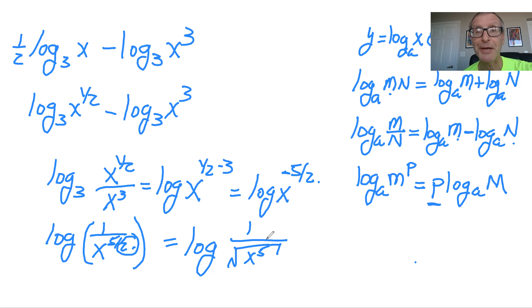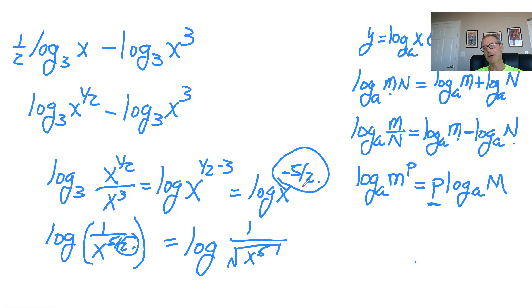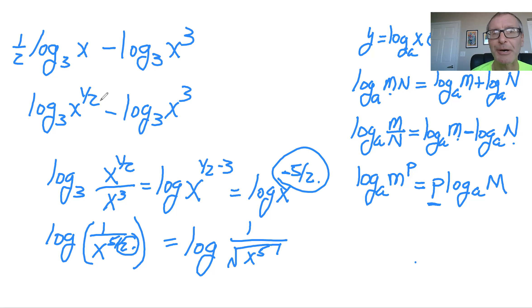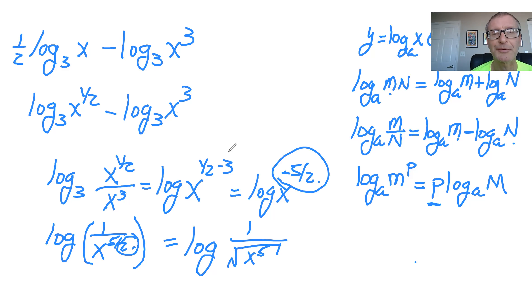So the process: use the power rule first, combine using the quotient rule, then apply laws of exponents to simplify the combination.